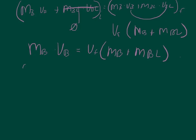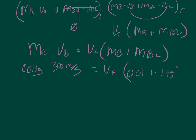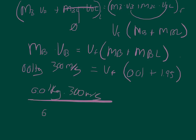The mass of the bullet is 0.01 kilograms and the velocity of the bullet is 300 meters per second, equal to the final velocity times 0.01 plus 1.95 kilograms. Dividing this term to the other side gives us the final velocity: 0.01 times 300 divided by (0.01 plus 1.95), which equals 1.5306 meters per second. This is how fast the bullet-block system is moving the moment after collision.